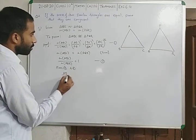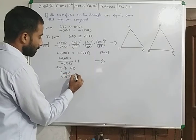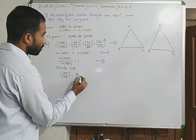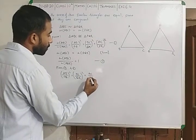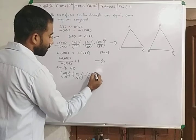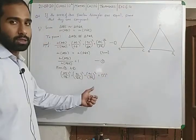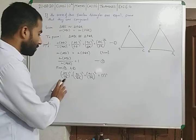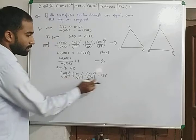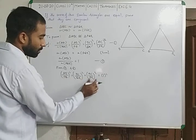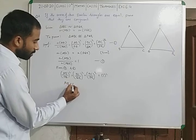AB upon PQ square is equal to BC upon QR square is equal to AC upon PR square is equal to 1 square. We can write 1 square, it makes no difference. Now we compare all to 1, then square cancels square. We will get AB is equal to PQ.